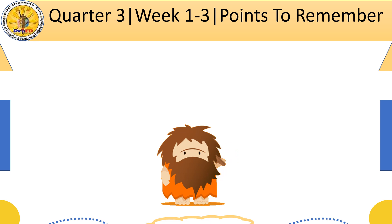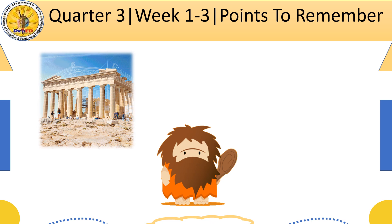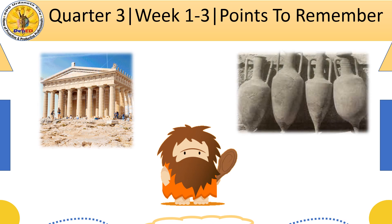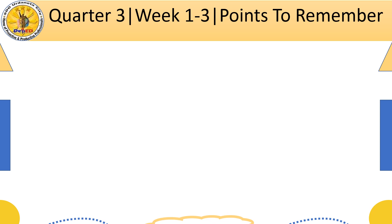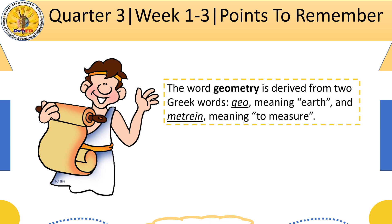Ancient people had already begun to devise mathematical rules and techniques useful for surveying land areas, constructing buildings, and measuring containers. Beginning about the 6th century, the Greeks gathered and extended this practical knowledge, and from it generalized the abstract subject now known as geometry. The word geometry is derived from two Greek words: geo, meaning earth, and mitran, meaning to measure. Thus, when taken literally, geometry involves measuring earthly objects.